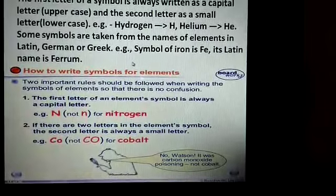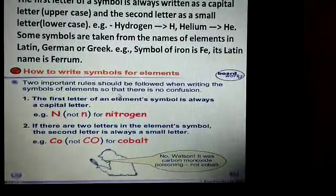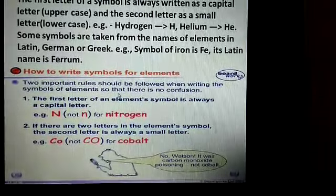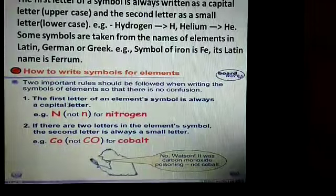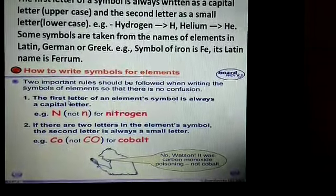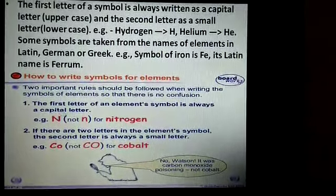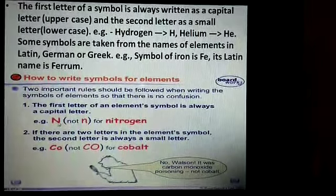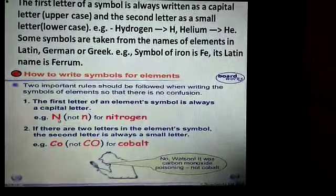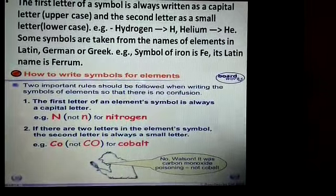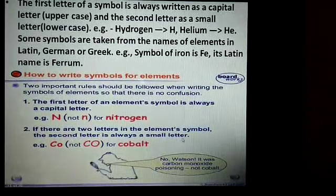Now, how to write symbols? Two very important rules we should follow while writing the symbols of elements. First one, if an element has a symbol of a single letter, then it should always be written in a capital letter. For example, N for nitrogen, not small n. Similarly, if there are two letters in the element symbol, then the second letter is always a small letter.